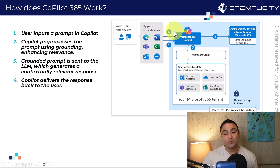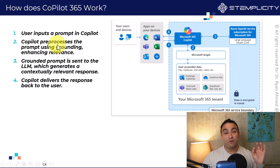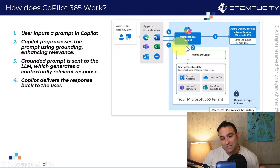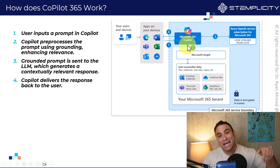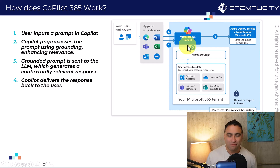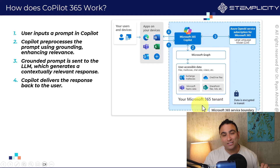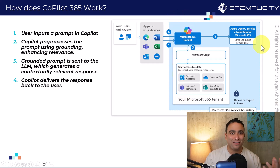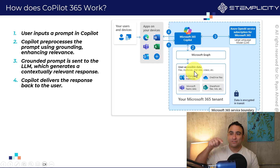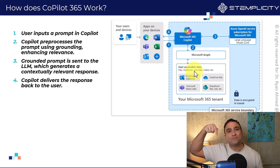What's going to happen is Microsoft Copilot 365 sits here and the Copilot is going to perform pre-processing on that prompt using grounding, enhancing the relevance of the prompt. Microsoft 365 has access to all your SharePoint sites, all your emails, and your OneDrive files. When you send the prompt, because Microsoft Copilot has access to all your data through what we call Microsoft Graph, it has access to pretty much all user-accessible data in a secure environment.